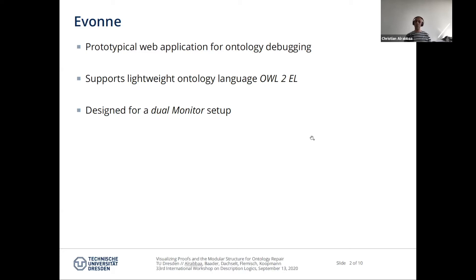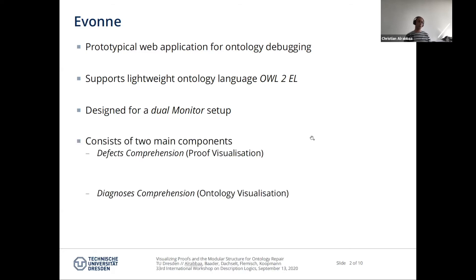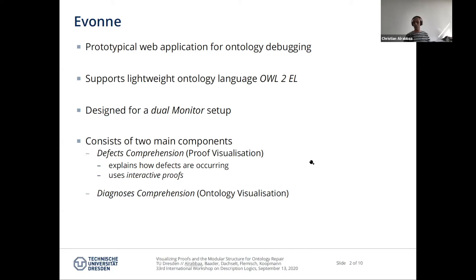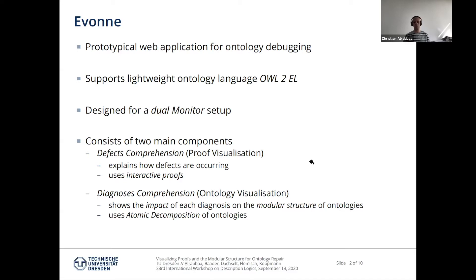Devon is designed for a dual monitor setup and consists of two main components. Each of these components corresponds to one of the two questions from before. The first component we call defect comprehension, which is responsible for explaining how the defects are occurring, and this is done by using interactive proofs. The second component is called diagnosis comprehension, and this one is responsible for showing the impact of axiom removal on the modular structure of ontologies, done by using atomic decomposition of ontologies.